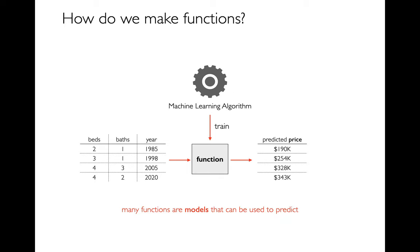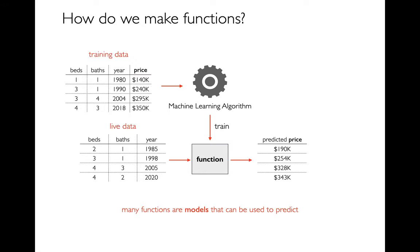The idea of machine learning is that instead of having a human write these functions, we're going to have a computer automatically generate these functions. The way they're going to do that is they're going to learn by example. We'll feed in a bunch of training data — a bunch of different houses that have sold for different amounts with different bedrooms and baths — and we're going to try to infer things like how much is a bedroom worth, how much is a bath worth, and how useful is it to have a newer house. Then we'll use that function to make predictions on other data, which is useful for things like property assessments or figuring out how to price a house.